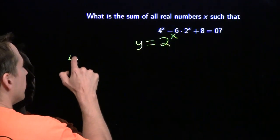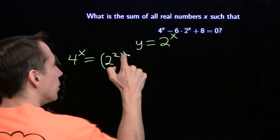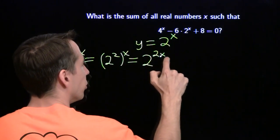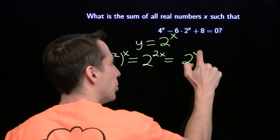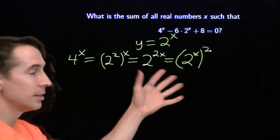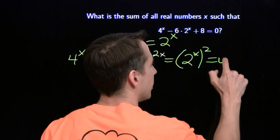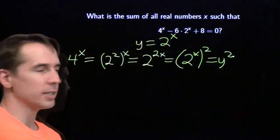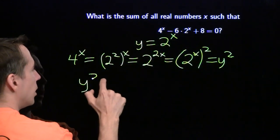Sure enough, break out our exponent rules. 4 is 2 squared, and 2 squared raised to the x power gives us 2 to the 2x. And now we can make it look like this with the x on the inside. So this is 2 to the x, the whole thing squared. That's just y. Pretty slick. That's just y squared. So 4 to the x is y squared. Now we put these into our equation, and sure enough, we have a quadratic.